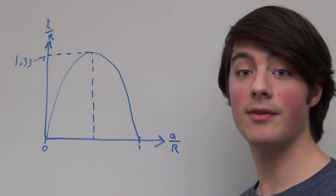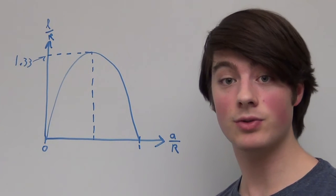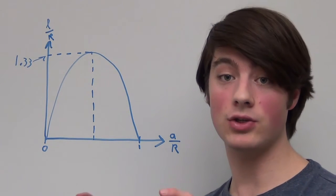In addition to these thin and thick neck catenoid solutions, there's another solution which we saw in the video, and that is two films, one on each ring.